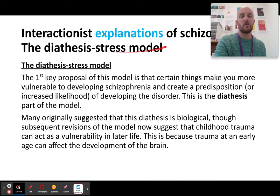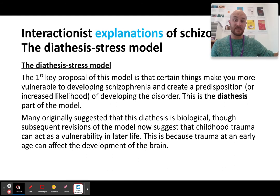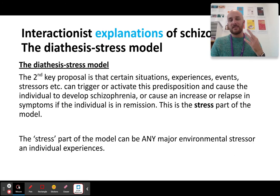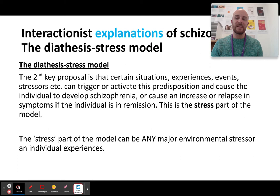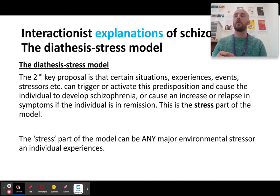Now, talking solely about the interactionist explanation: the second part of the model is the stress part. You need to understand what can act as stressors — stressful events — in order to actually cause an onset or a relapse of schizophrenia. The stress part is basically any major environmental stressful event that someone experiences, such as a divorce or someone dying or major life changes.